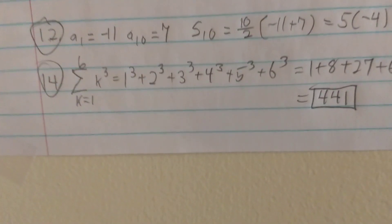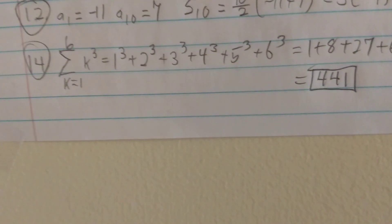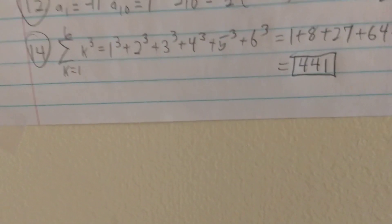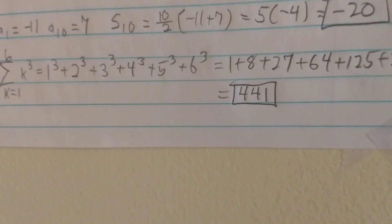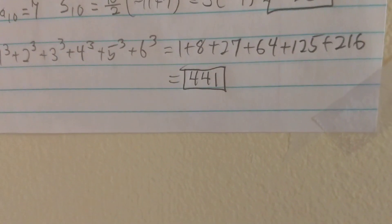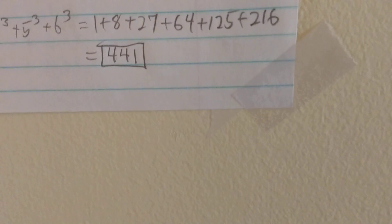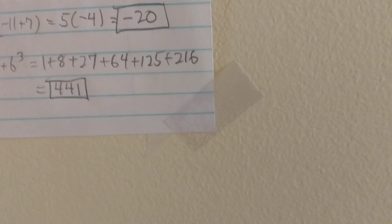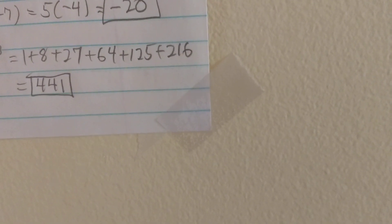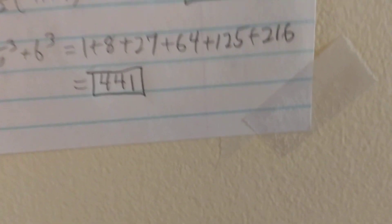For problem 14 using sigma notation, this is the sum from k equals 1 to 6 of k cubed — adding up the first 6 cubes: 1 cubed plus 2 cubed plus 3 cubed plus 4 cubed plus 5 cubed plus 6 cubed. Most of us know up through 3: 1 plus 8 plus 27. Then 4 cubed is 64, 5 cubed is 125, and 6 cubed is 216. Adding those 6 cubes together gives 441.